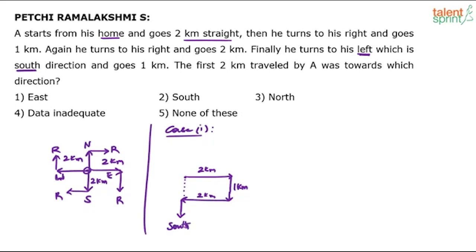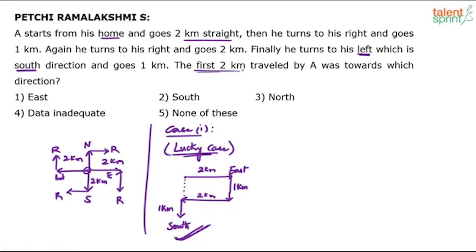We are lucky — it comes out to be south, exactly as stated in the question. So this is the correct case. A starts from home, goes 2 kilometers straight east, turns right and travels 1 kilometer, again turns right and travels 2 kilometers, and finally turns to his left — which comes out to be south. Since this is the correct case, the first 2 kilometers is in the east direction. So east is your answer — Option 1.